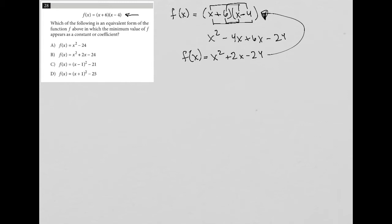I already found an equivalent form, and I see that it matches choice B. So B passes the first test — it is definitely an equivalent form. Choice A isn't, because we have a 2x term missing from A.